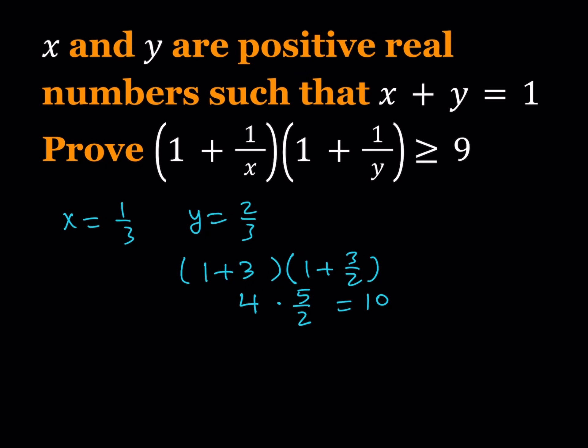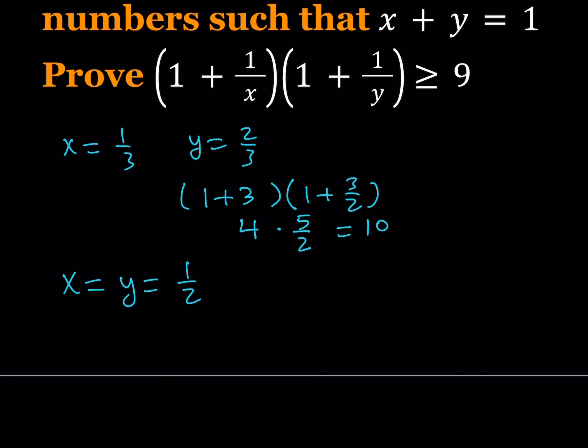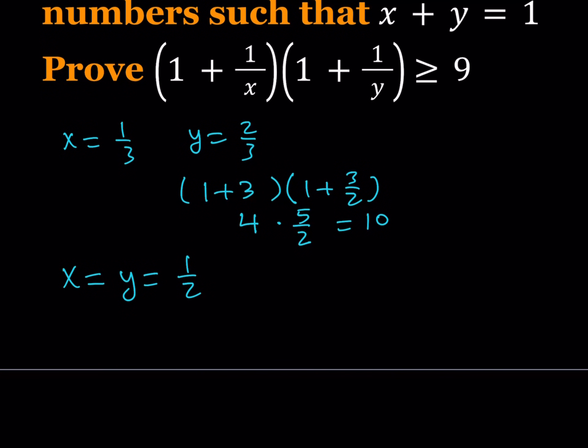Well, since x and y are symmetrical here, why don't we just set them equal to each other? What happens if x equals y? Then we get x equals y equals 1 half. Now, in that case, the reciprocal of 1 half is going to be 2. So, we get 1 plus 2 multiplied by 1 plus 2, which is equal to 3 times 3, which is equal to 9. So, 9 is attainable if x and y are equal.